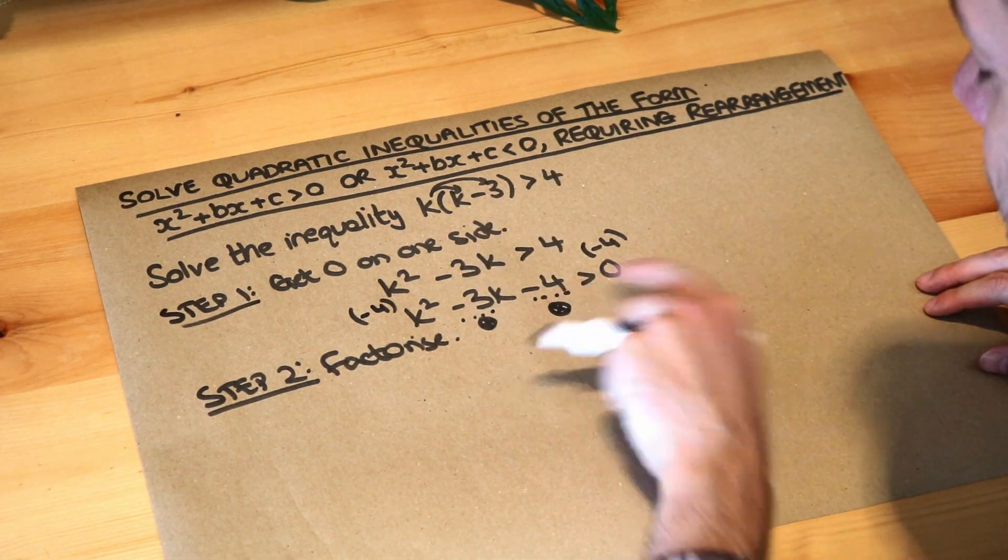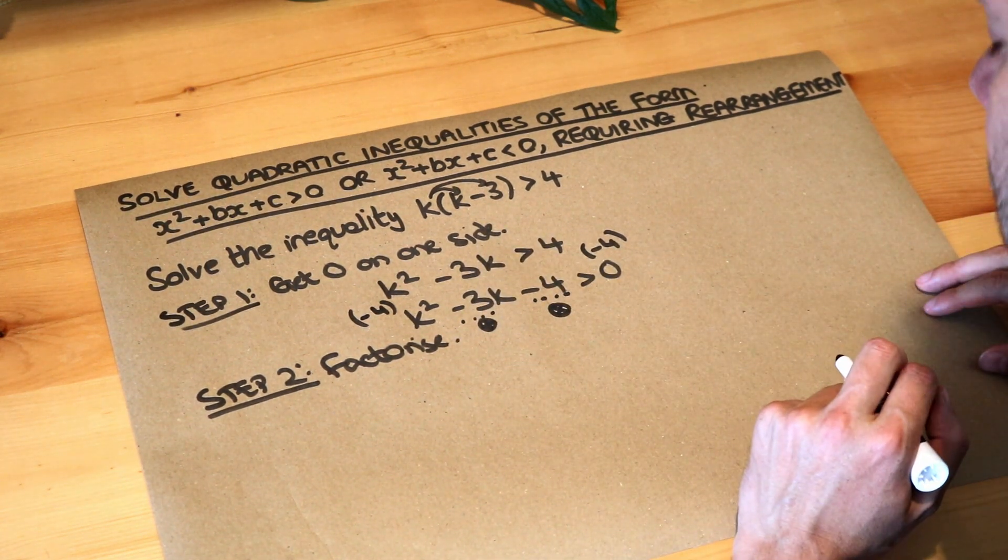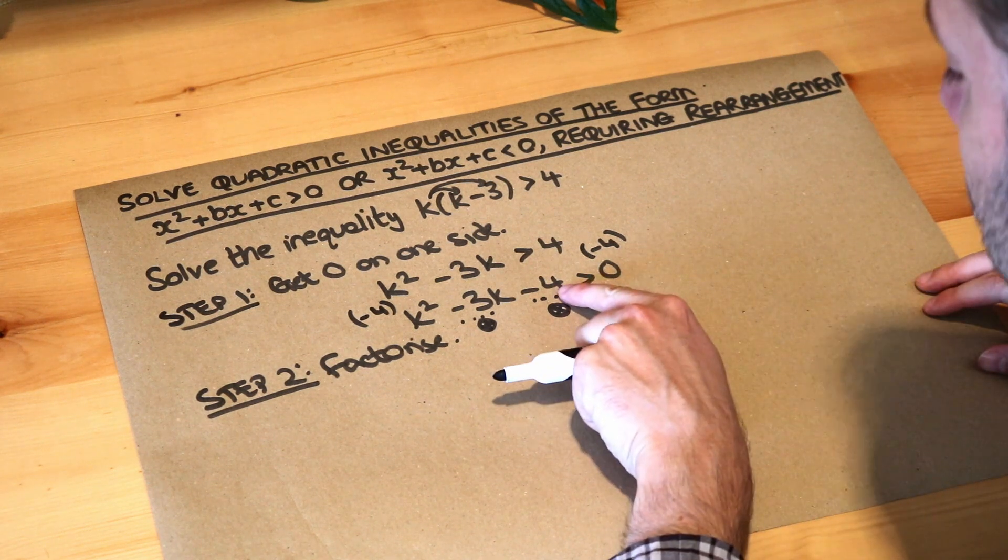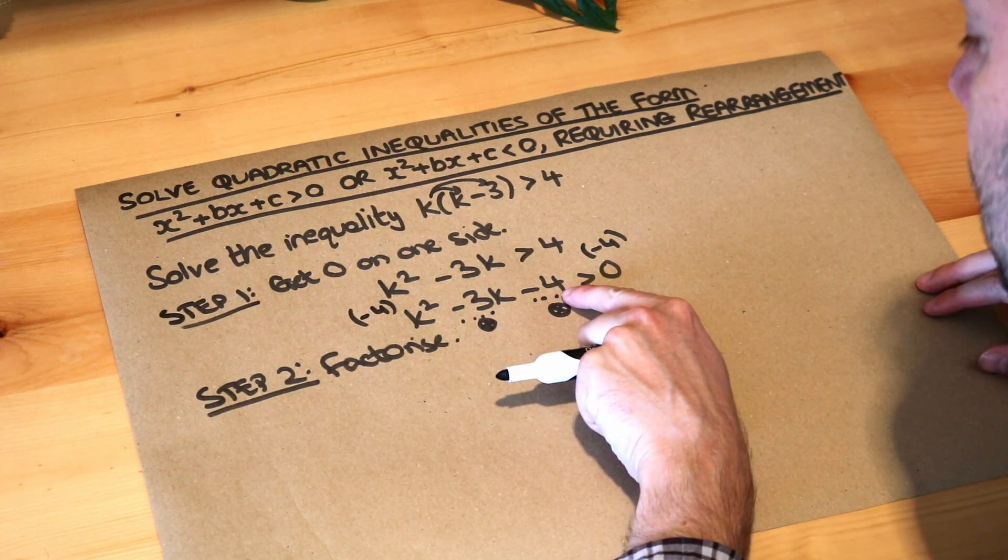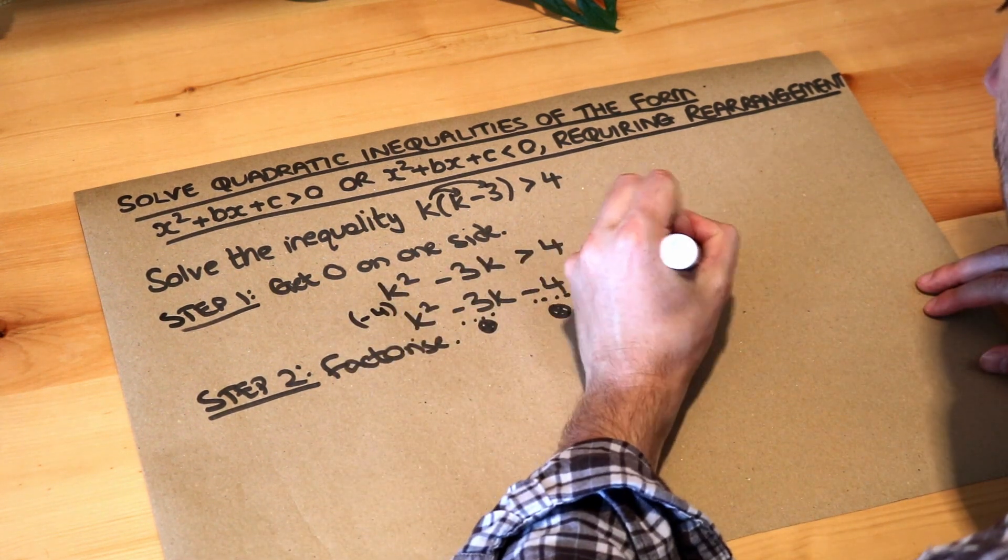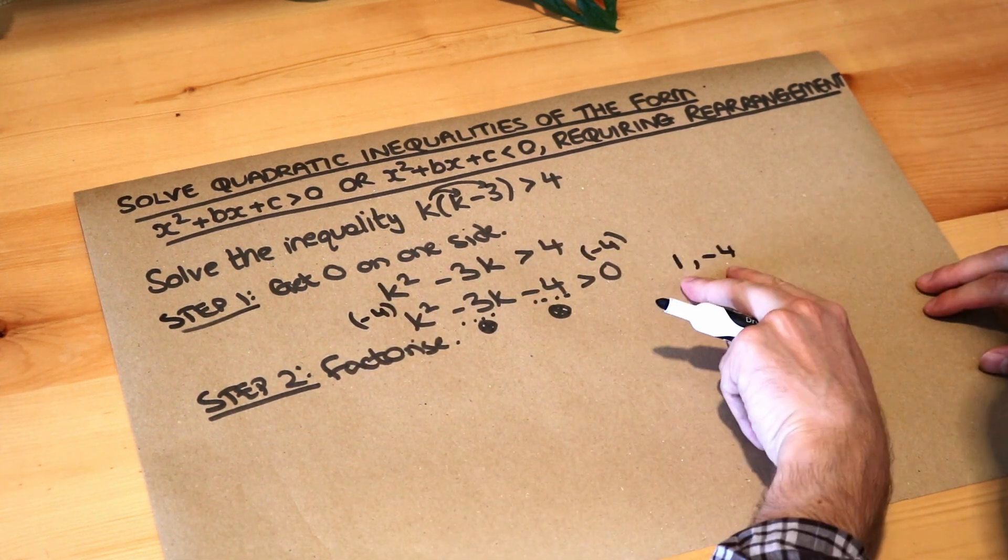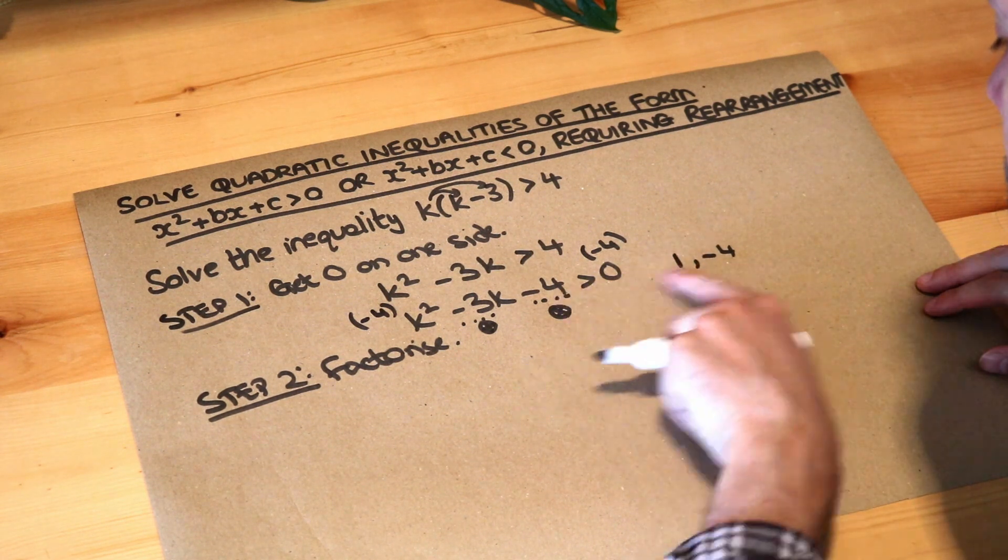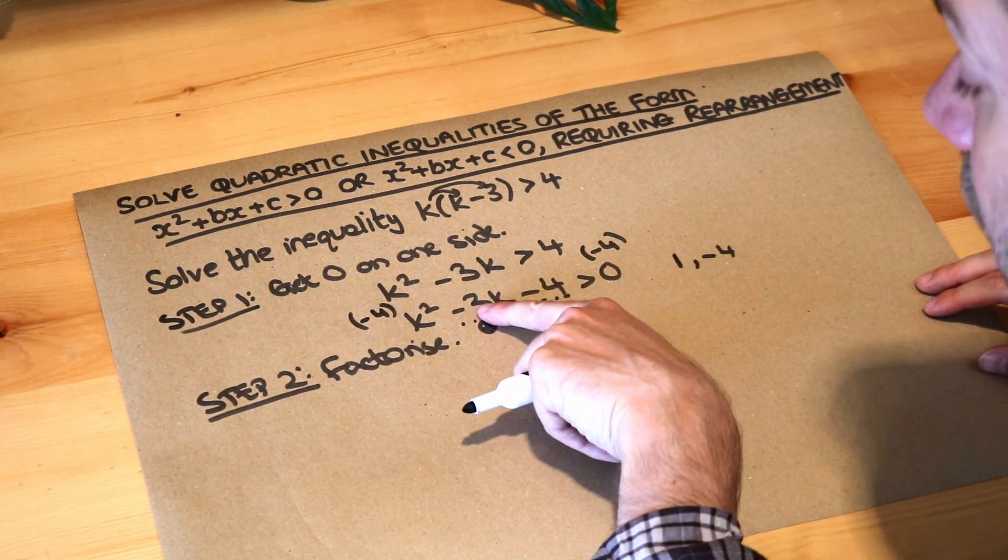If they times to give a negative number, one of them's got to be positive and one of them's going to be negative, so it's probably going to be one and four but one has to be negative. It's one and minus four because those numbers multiply to give minus four, but when you add the two numbers they give you minus three.